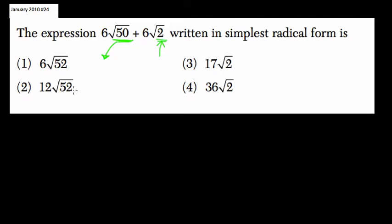If you look at all the answers, they have radical 2 here and here. Over here radical 52 and 52, they're trying to see if you'll add radical 50 and radical 2, but that's like adding x's and y's. You can't do that. Radical 50 and radical 2, you can't simply add them.